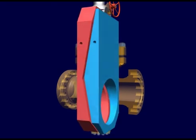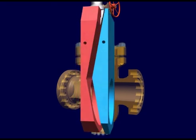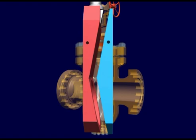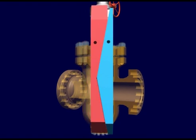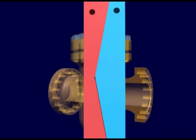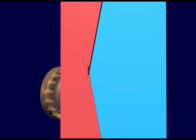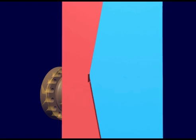In the expanding gate valve, the gate is made of two parts: one female half here in red and one male half in blue. The inclined inner surfaces slide one onto the other, generating the thrust of the gate against the seats. This type of gate is designed in a way that the two inner halves come into contact only on the upper or the lower surface.